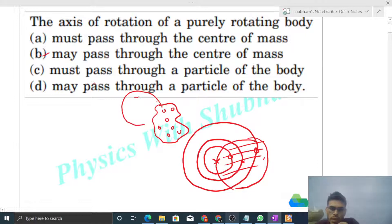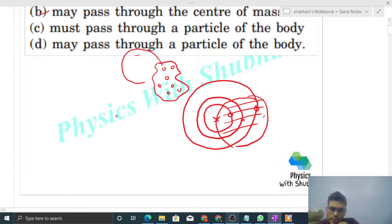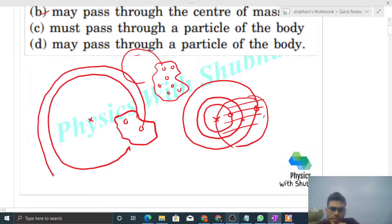Must pass through a particle of the body. So if you can see any point in a circular path...